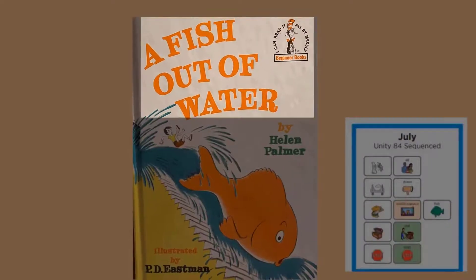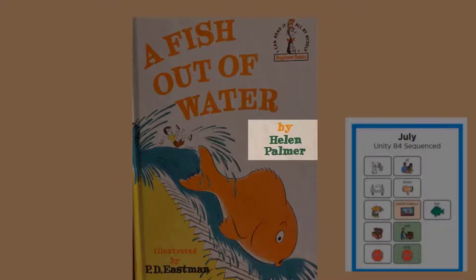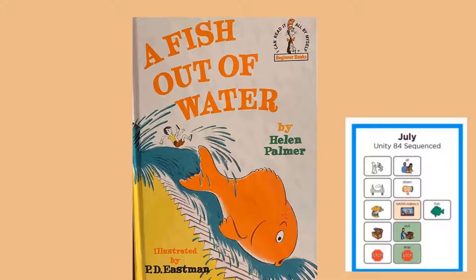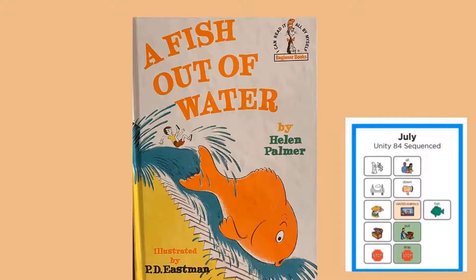This month's story is called A Fish Out of Water. It was written by Helen Palmer and illustrated by P.D. Eastman. Whoa, look at that big fish. I think this story will be about a fish. What do you think?